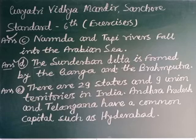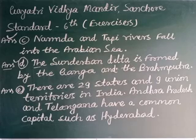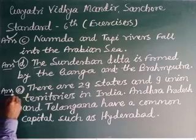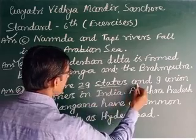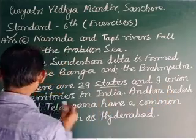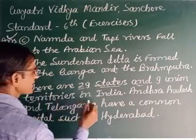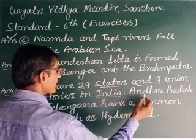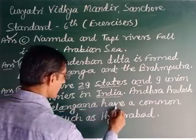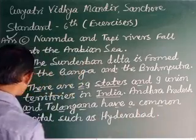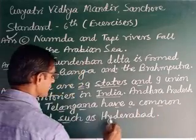Question E: how many states and union territories are there in India, and which states have a common capital? There are 29 states and 9 union territories in India. Andhra Pradesh and Telangana have a common capital, which is Hyderabad.